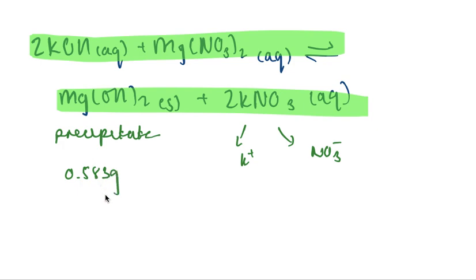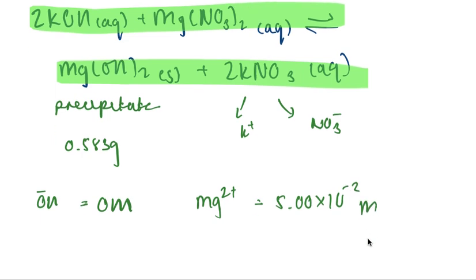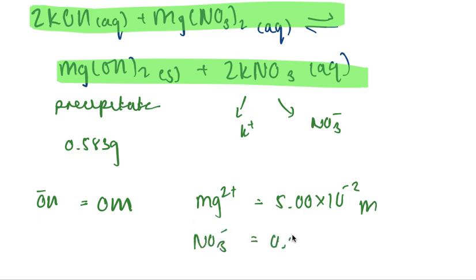Concentration of the OH minus ions is 0 molar. Final concentration of Mg2+ ions is 5.00 times 10 to the minus 2 molar. Concentration of NO3 minus ions is 0.200 molar. Concentration of K+ ions is 0.100 molar.